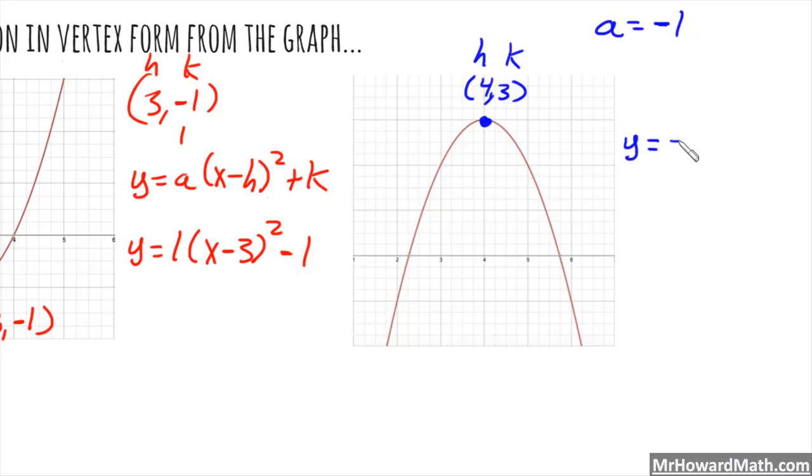I have everything I need. y equals, a is negative 1, x subtract 4, because h is positive 4, I need a negative 4 here, quantity squared, and then plus 3. And this is the form again: y equals a, x minus h, quantity squared, plus k. So all we need is a, h, and k. And the vertex gives us h and k. The stretch factor is determined by the process that we just went through.